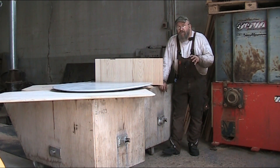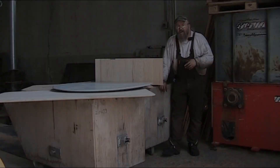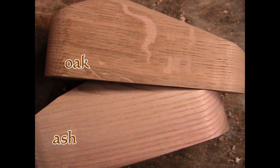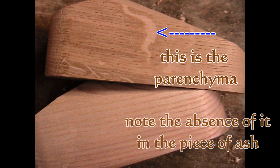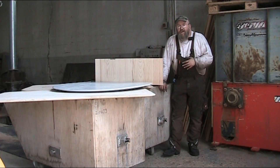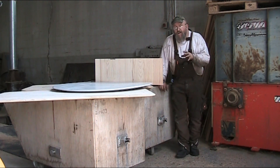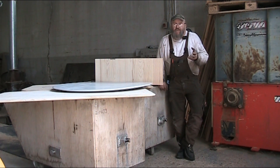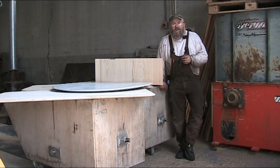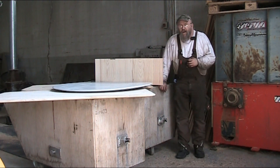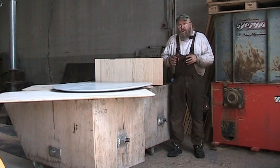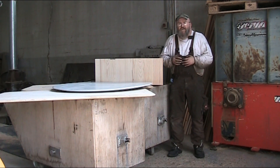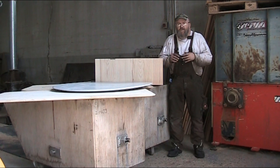So now you've seen two different variations of the identifying feature that oak has that ash doesn't — and that's parenchyma. If you look and see those broad bands of parenchyma — I'll show you with an arrow here — that's the parenchyma that ash doesn't have. It doesn't develop it, or it does, but in a microscopic form that you can't see with the naked eye.